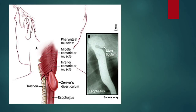This picture shows Zenker's diverticulum. Killian's dehiscence is a weak area in the inferior constrictor muscle. Pharyngeal pouch is a pulsion diverticulum. It starts in the midline of the posterior pharyngeal wall. There is imperfect relaxation of the cricopharyngeus muscle, which increases the pressure in the pharynx, mainly seen during swallowing. This leads to protrusion of mucosa through Killian's dehiscence, usually towards the left side.